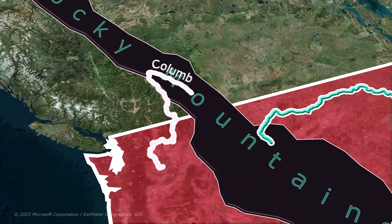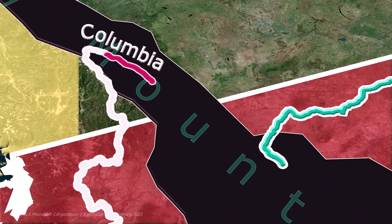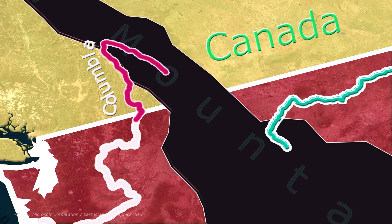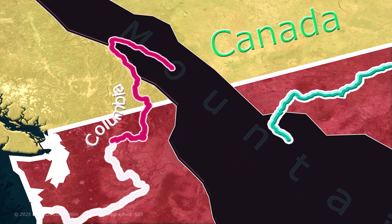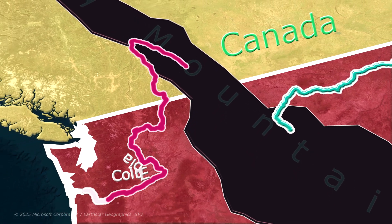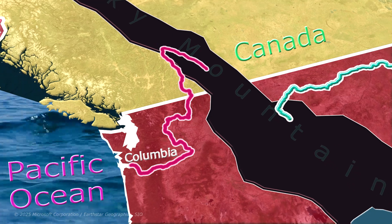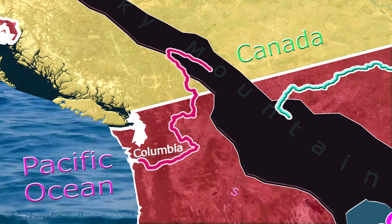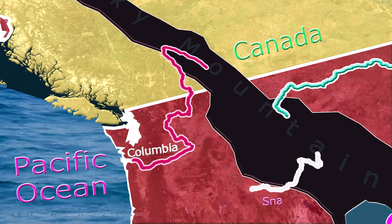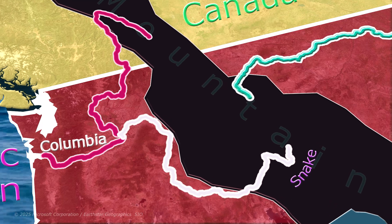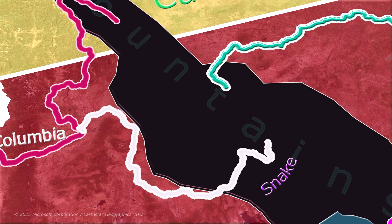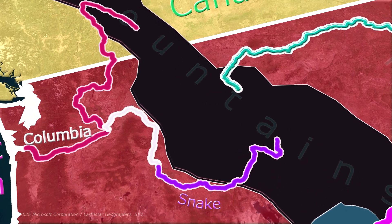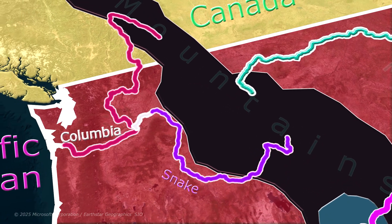Now let us study the Columbia River, which originates in the Rocky Mountains of Canada, flows through the northwestern United States, and finally empties into the Pacific Ocean. Its major tributary, the Snake River, also rises in the Rocky Mountains and joins the Columbia within the United States.